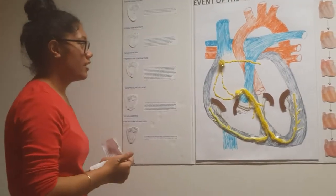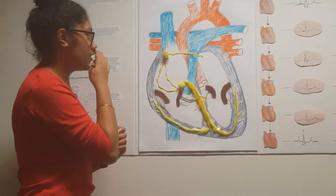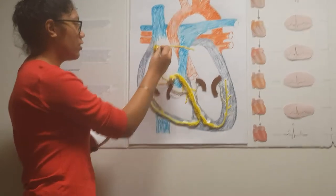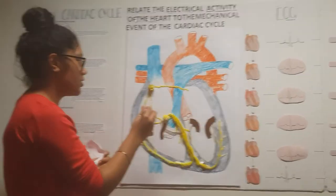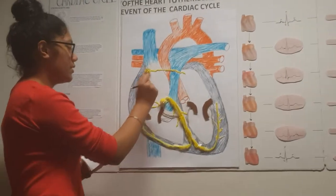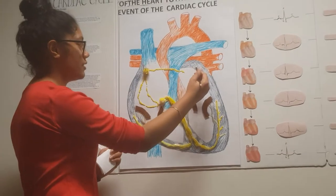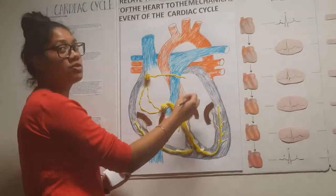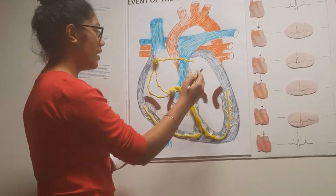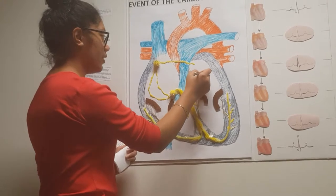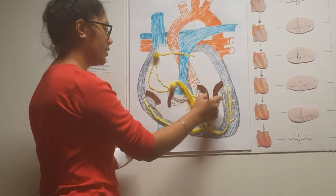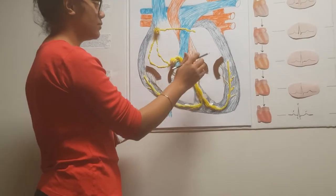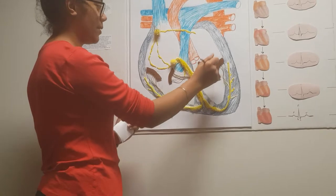The second step of the cardiac cycle is the atrial contraction. This is when the SA node of the conduction system sends a signal that causes the atrium to contract, causing blood to be pumped into the ventricle to fill it up to its full capacity.